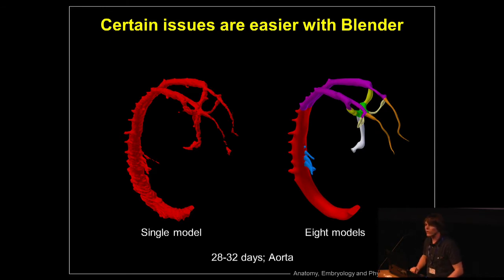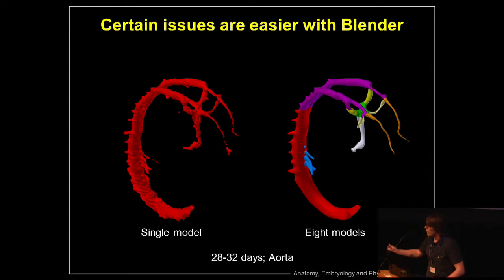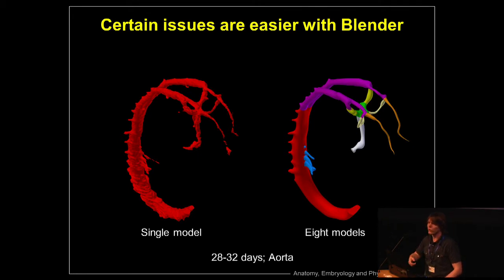Some issues are just easier to fix with a 3D software like Blender. On the left we have a single model that has been annotated by the students — they've gone through a thousand sections to identify that this part is the aorta and belongs together. But when the embryologists look at it, they think the red part is the fused dorsal aorta, while the purple one should be the paired dorsal aorta because they're not connected anymore. So they need to divide those names, and that's something we can do really easily in Blender — we can just create new models out of them. Otherwise they'd have to go through all the segments again.